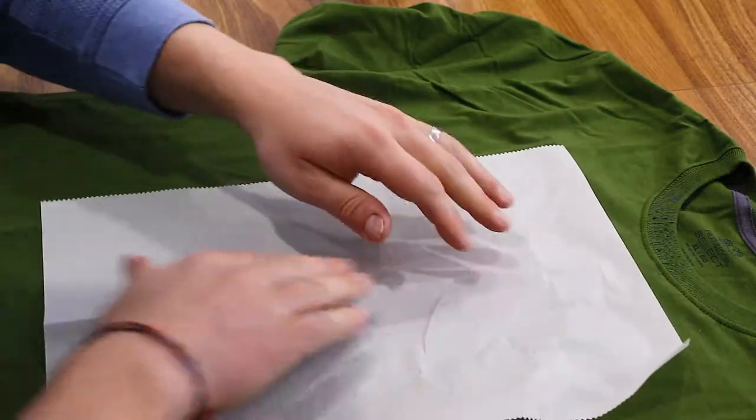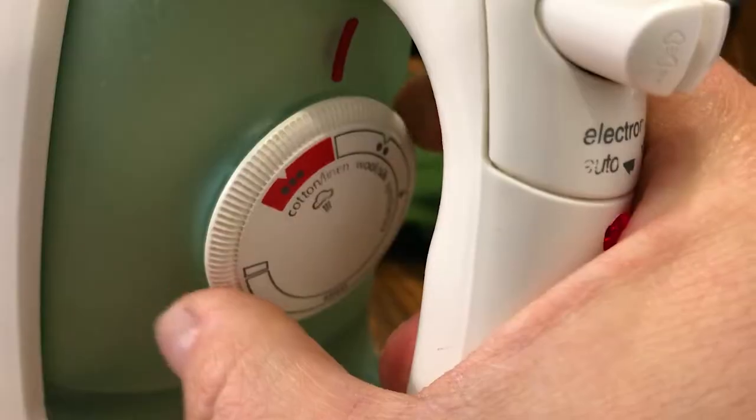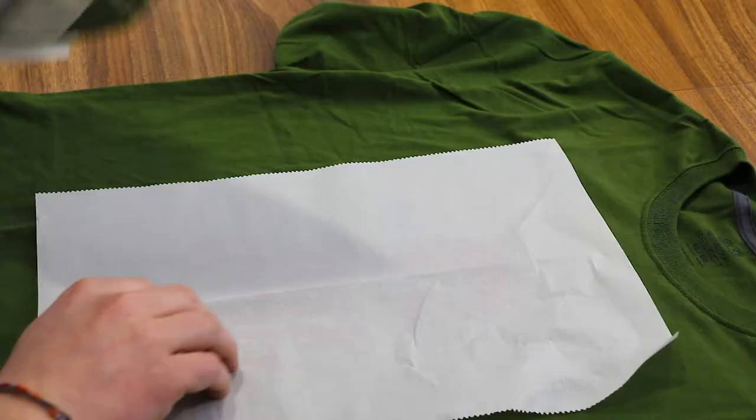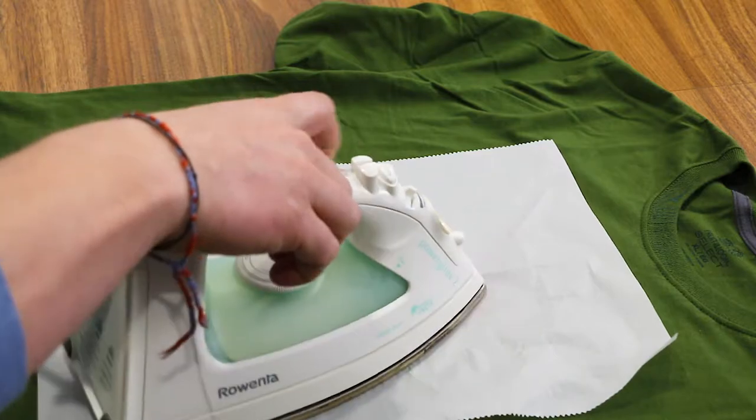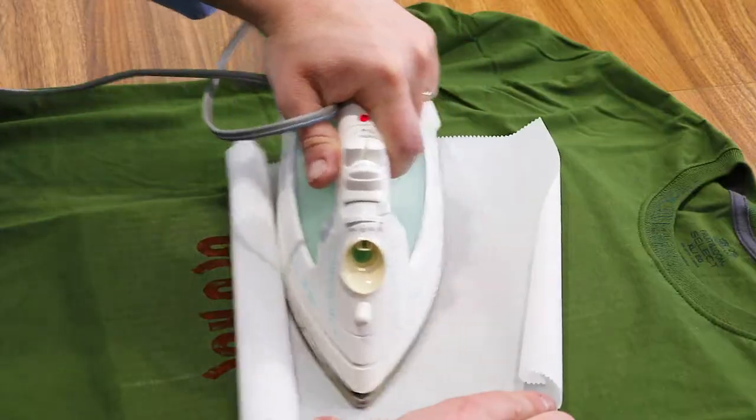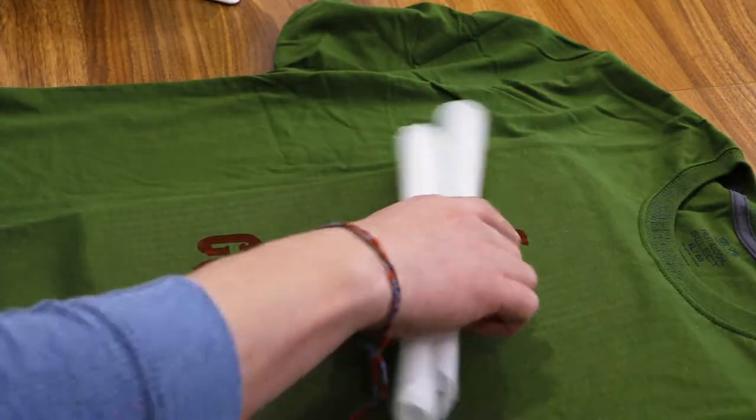It dried overnight and the next day I used a sheet of parchment paper and a hot iron to set the ink. Your ink may have different requirements so definitely read the instructions before doing your thing. After about four minutes the ink was set and the shirt was ready to go.